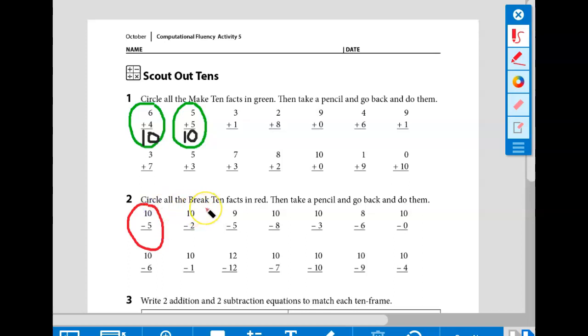How about the next one? This is a break 10 fact. It starts with 10 and it takes 2 away. 10 minus 2. What about this next one? 9 minus 5. This is not a break 10 fact. So we do not circle it.